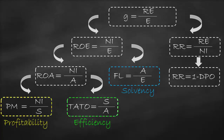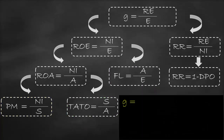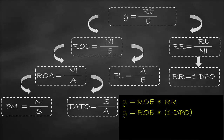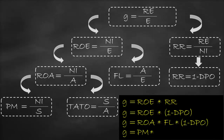Therefore, we can rewrite the sustainable growth rate formula as the return on equity times the retention ratio. Or we can also write the growth rate formula as the return on equity times one minus the dividend payout ratio. Or we could use the two-factor DuPont analysis to write the growth rate formula as the return on assets times the financial leverage times one minus the dividend payout ratio. Or lastly, we could use the three-factor DuPont analysis to write the growth rate formula as the profit margin times the total asset turnover ratio times the financial leverage times one minus the dividend payout ratio.